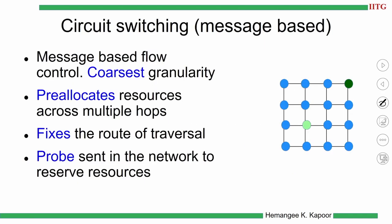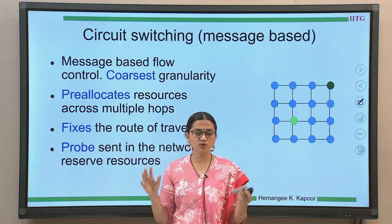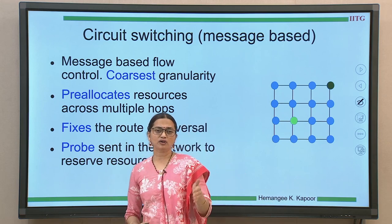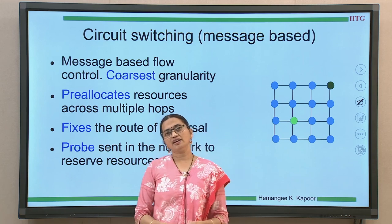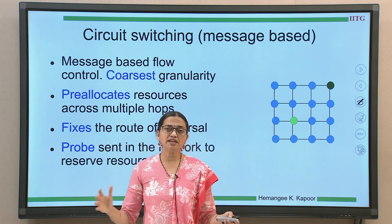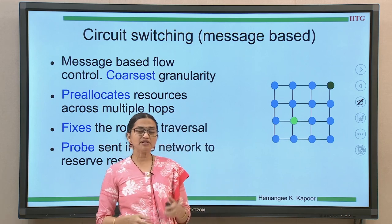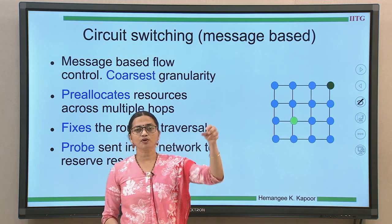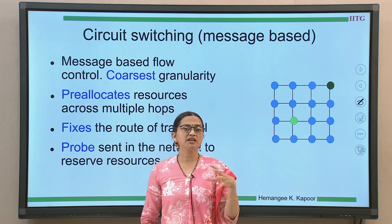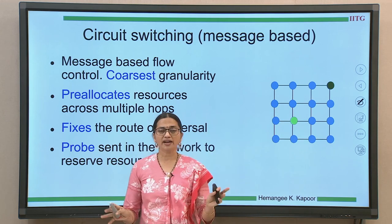We start with message-based flow control, which is called circuit switching — the coarsest type of flow control. It is like a big convoy going through the city: you stop all traffic and let the complete convoy pass through a particular route, only then normal traffic resumes. Until the convoy passes, certain portions of the route are reserved even if the convoy has not yet reached there.